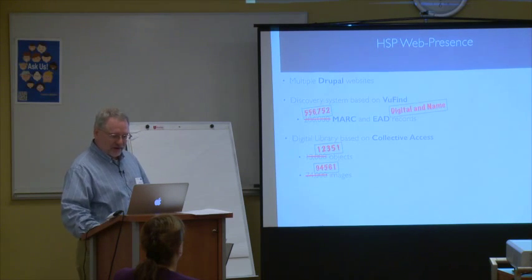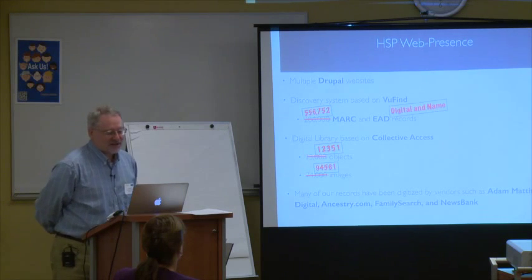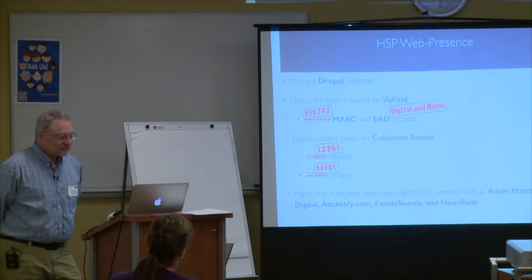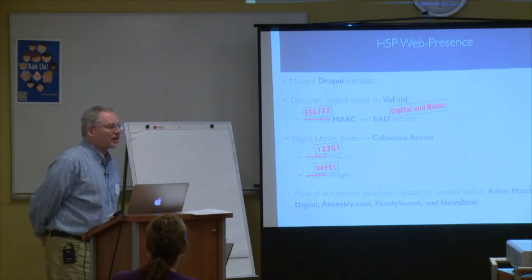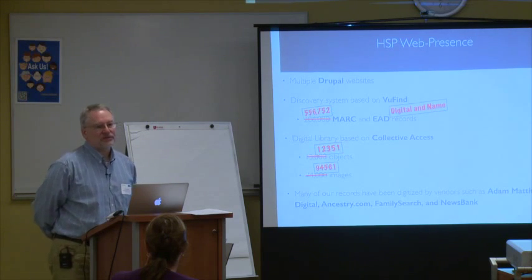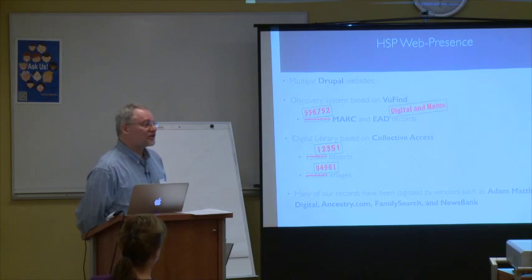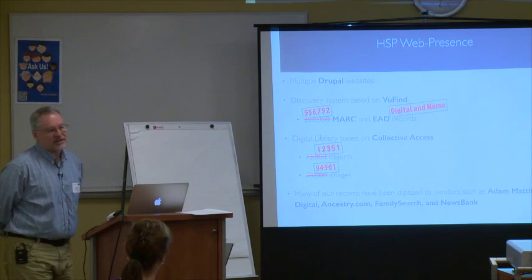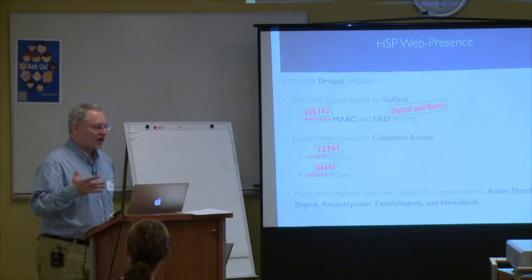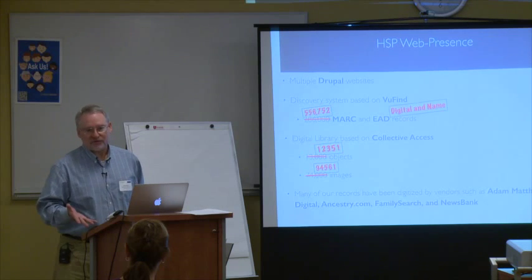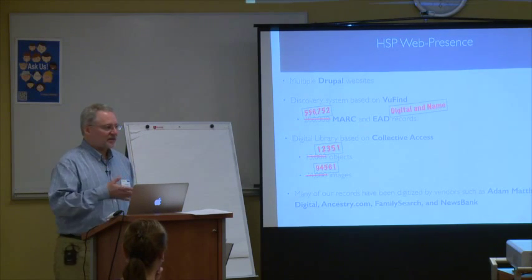I've made corrections here. We have multiple Drupal websites and a discovery system based on VuFind, now with more than 556,000 records. Those are a combination of MARC records from our printed materials, EAD records from our Archivist's Toolkit database — so archival records — records from our digital asset management system, and names from our genealogy databases. We have those different record types, and that has been a driver for utilizing features we use heavily in VuFind, particularly the ability to create separate record drivers and custom displays in your theme based on the type of record you're displaying.